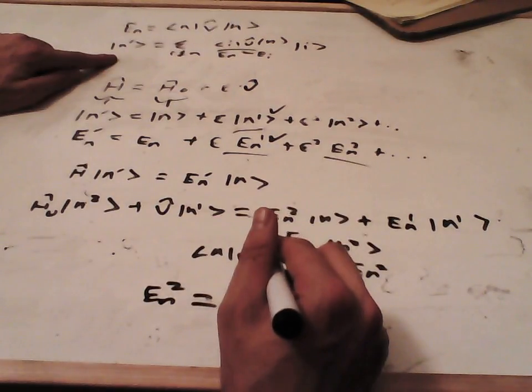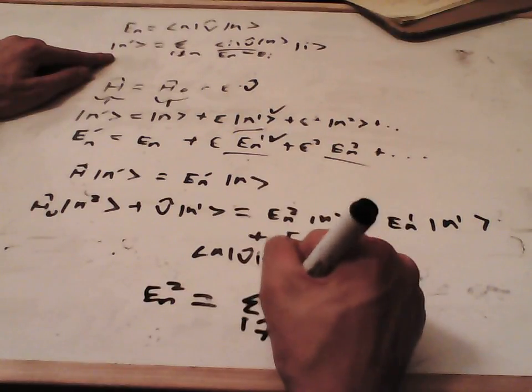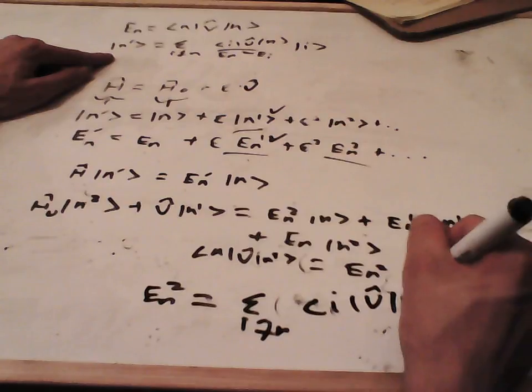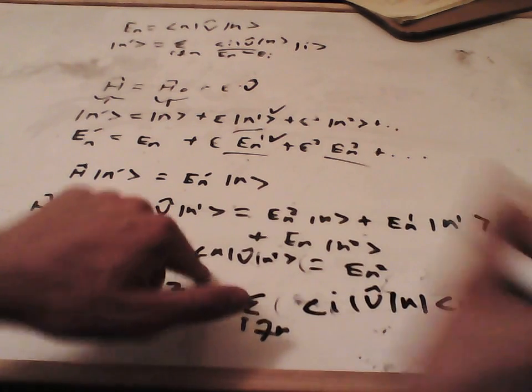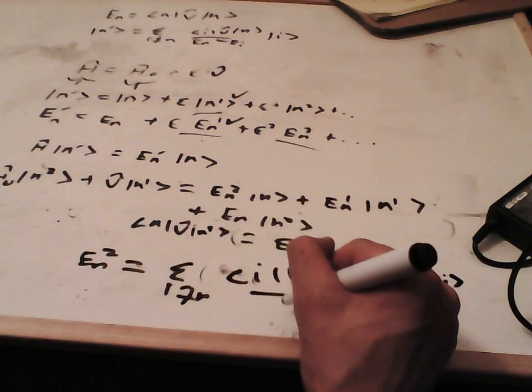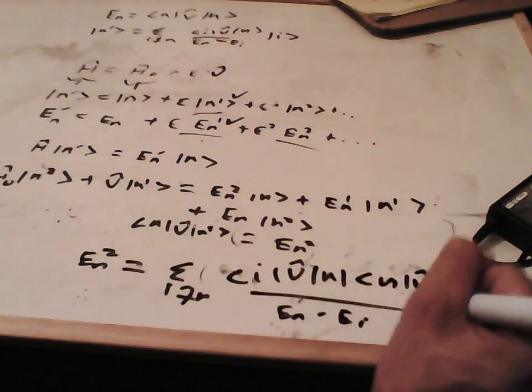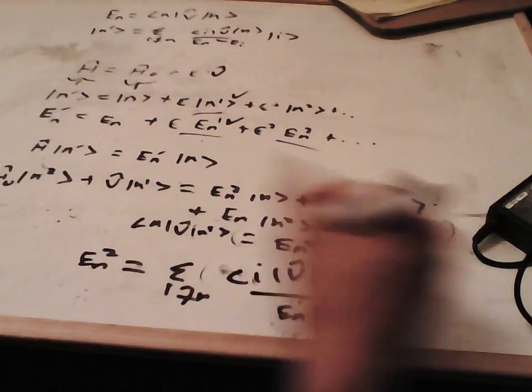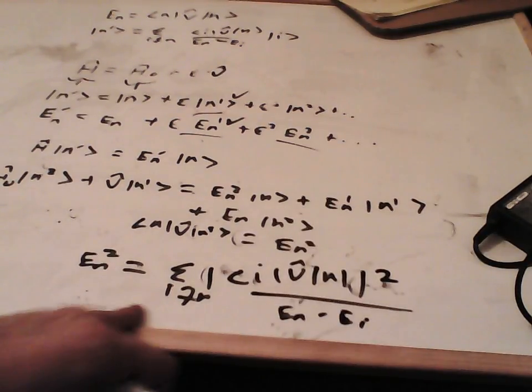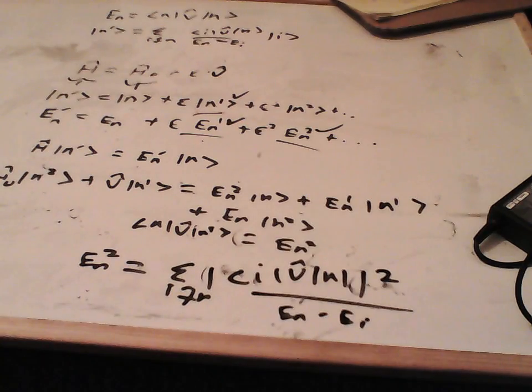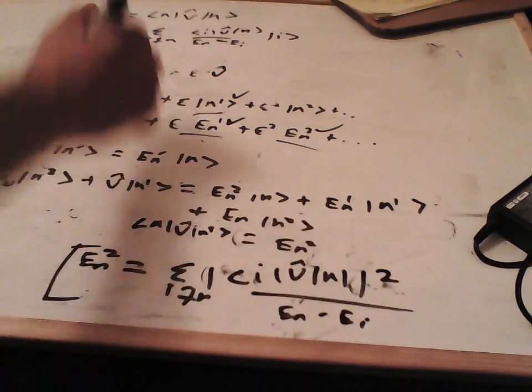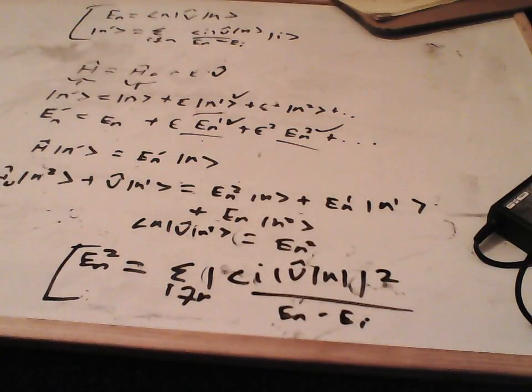And we know En1, we have it written up here, so this actually becomes the sum over i not equal to n times by i V n, and then we are going to get n V i, over En minus Ei. Now we can just write this as a modular squared, and that gives us our final result. So that gives us this term here, and that gives us all the terms we were working out how to find in this video. So that's a general derivation of the results of perturbation theory. So we have this result here and these two results up here.